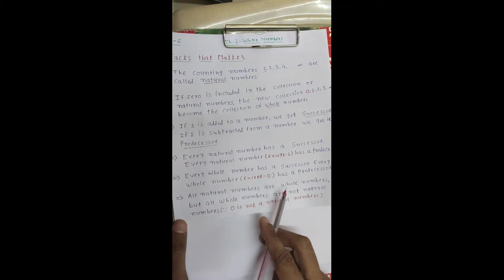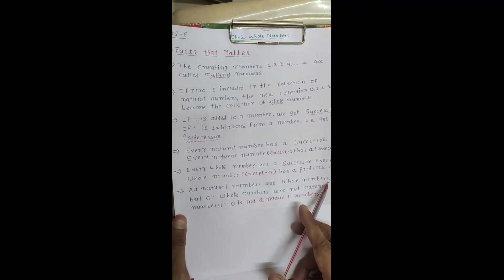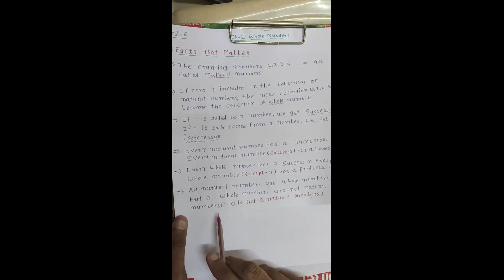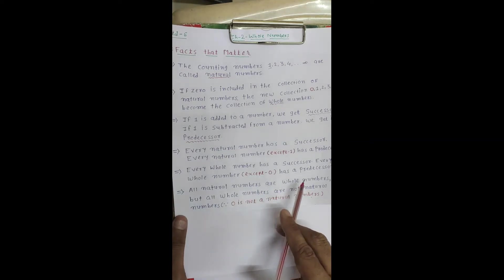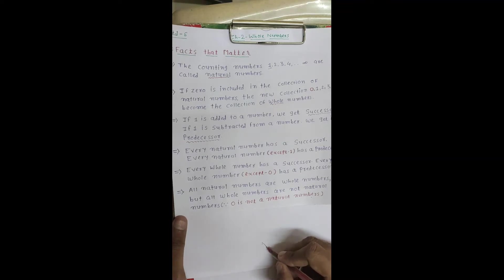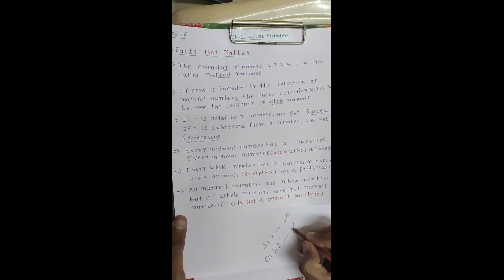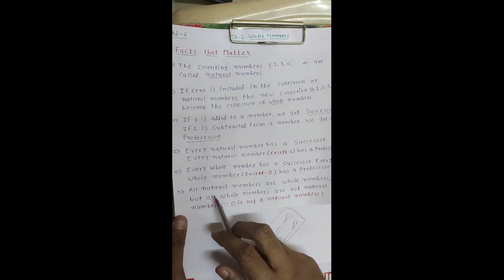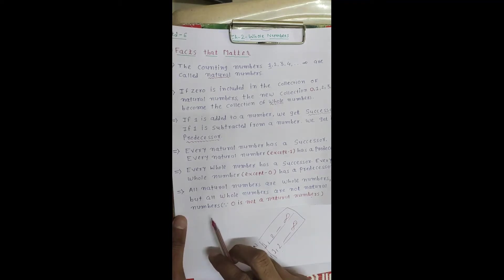All natural numbers are whole numbers. But all whole numbers are not natural numbers. Natural numbers start from 1, 2, 3 up to infinity, and whole numbers start from 0, 1, 2, 3 up to infinity. The number 0 is a whole number but not a natural number. So all natural numbers are whole numbers, but all whole numbers are not natural numbers — because 0 is not a natural number. Remember this.